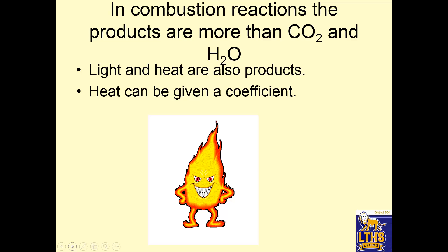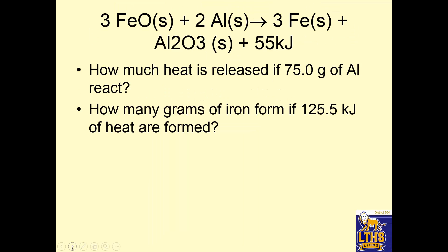In combustion reactions, the products are more than CO2 and H2O. Light and heat are also the products. Heat can be given a coefficient. So if I have 3 iron oxide plus 2 aluminum yields 3 iron plus aluminum oxide plus 55 kilojoules. This way we have a coefficient for it. So for every 3 moles of iron oxide we use, we get 55 kilojoules. For every 2 moles of aluminum, we get 55 kilojoules of heat released.